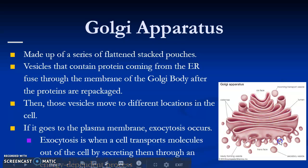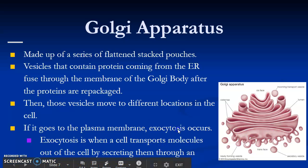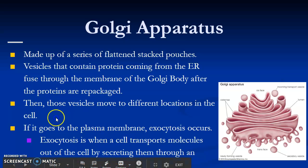Vesicles that contain protein come in from the ER and fuse through these membranes. After the proteins are repackaged, those vesicles move to different locations in the cell, like the plasma membrane, where exocytosis occurs.